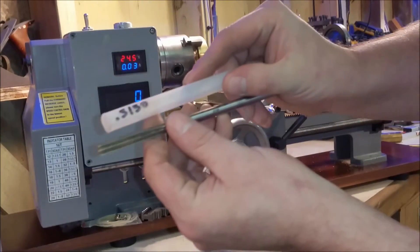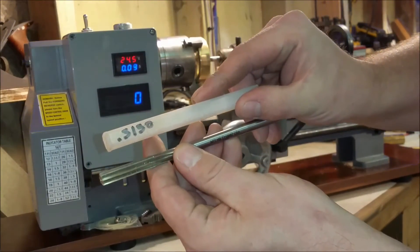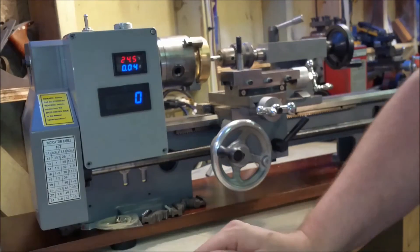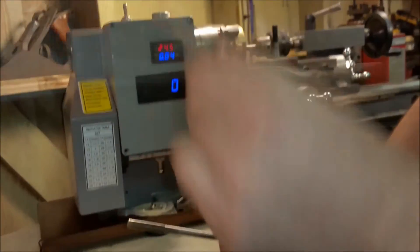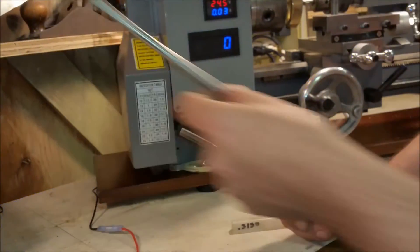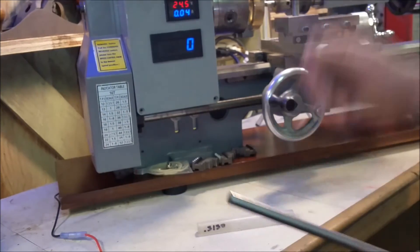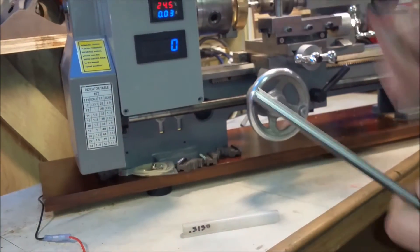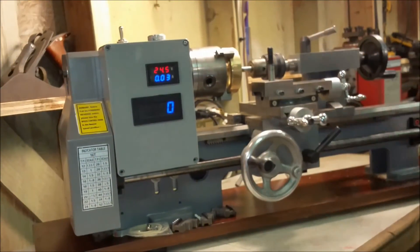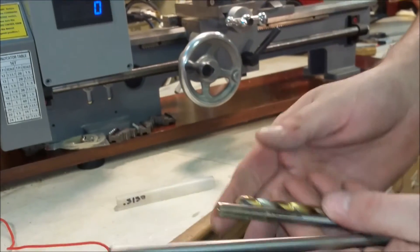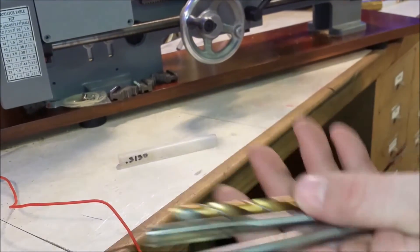This is a 31/32 reamer to fit this drill rod right here. We'll go ahead and center drill it to get it started, then use the Jabra drill, and finish up with the reamer. Then we'll close this video out, and later I'll show you how to put the set screw in. Pause now, we'll turn around and show you the cutting.